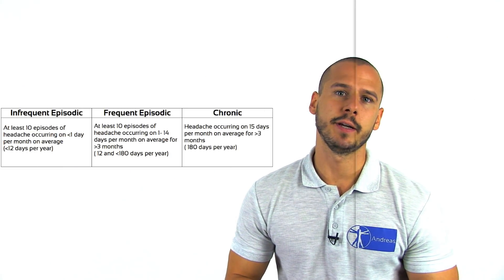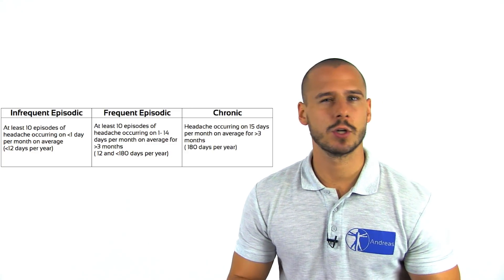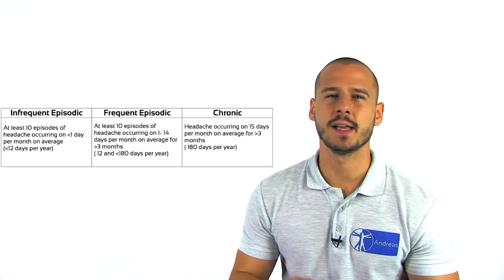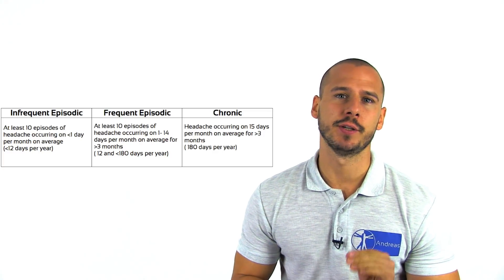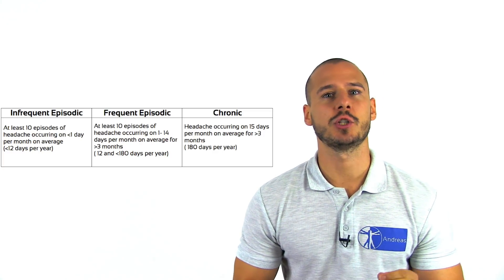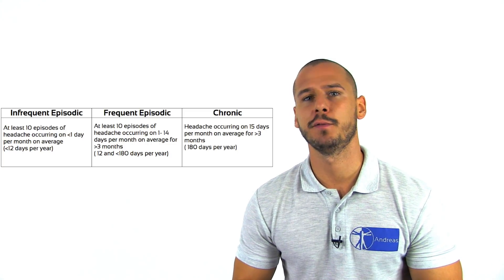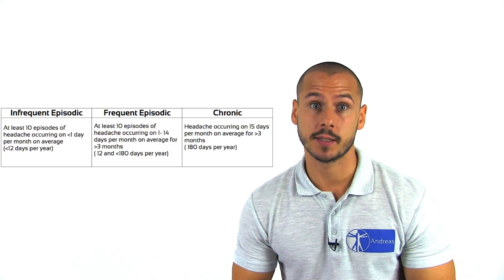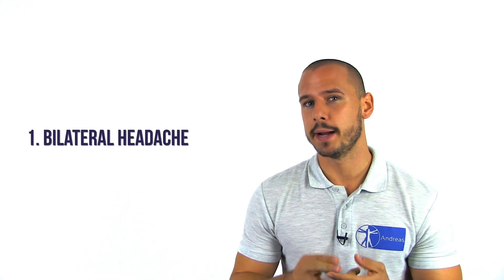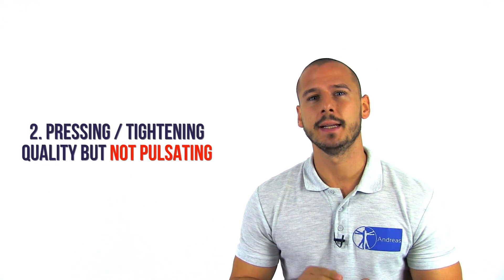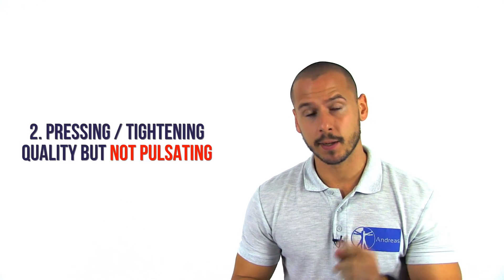Tension type headaches can vary from infrequent episodic, frequent episodic, to chronic, as seen in this table. While the frequency and duration differ, patients in all three categories need to report at least two of the following four characteristics. Number one: the headache is bilateral. Number two: it has a pressing or tightening quality, but not pulsating.